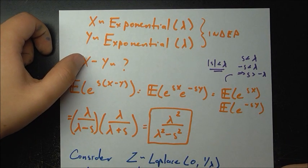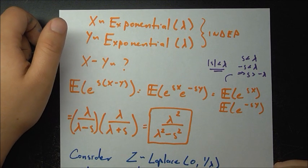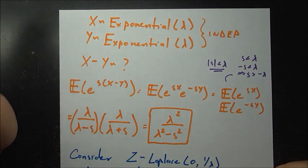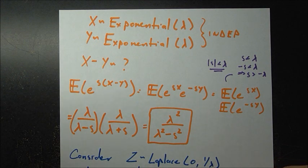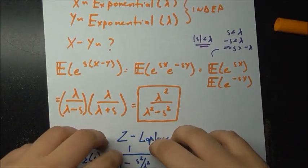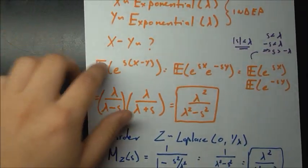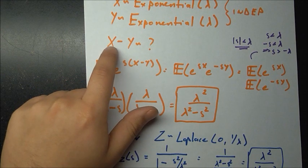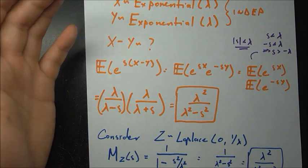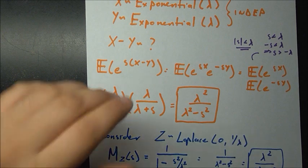We say x and y are both distributed as Exponential with the same parameter lambda, and furthermore they are independent. We want to know the distribution of the difference x minus y. Using the MGF inversion property — which says that if two distributions have the same MGF they must be the same distribution — if we can find the MGF of x minus y and match it to a known one, we will know the distribution.